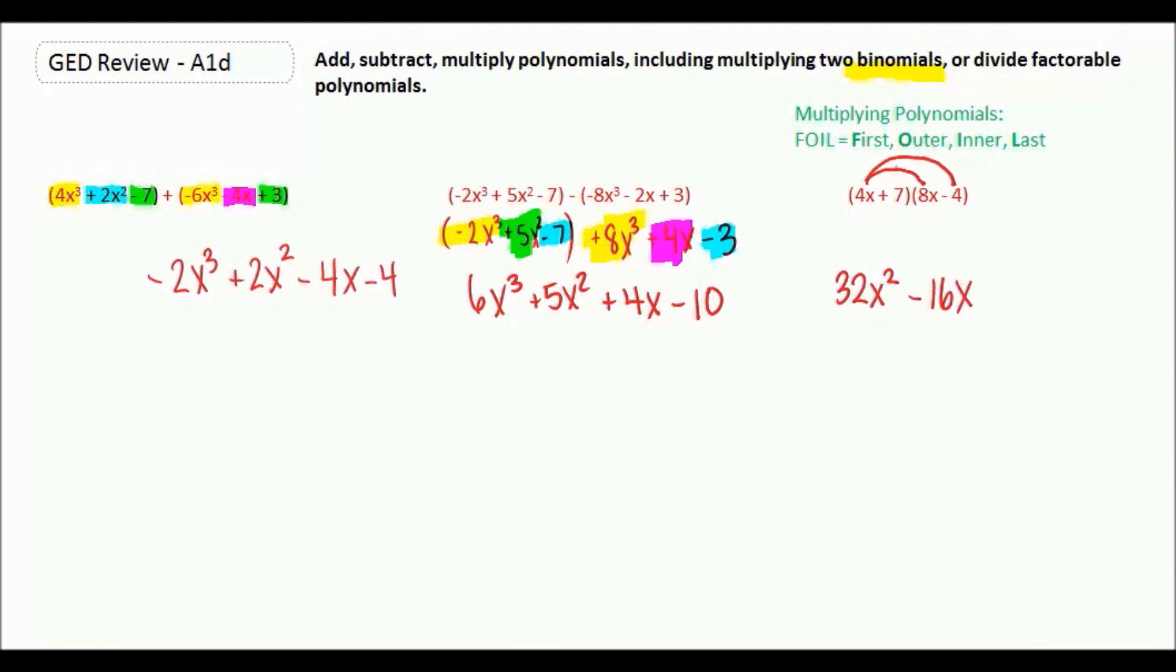Now we do the inners. Start here and move on to there. 7 times 8x is a 56x. And then we do this times the last number. 7 times negative 4 is negative 28.